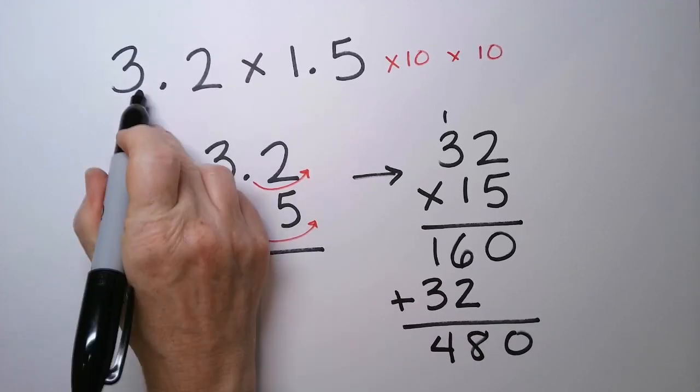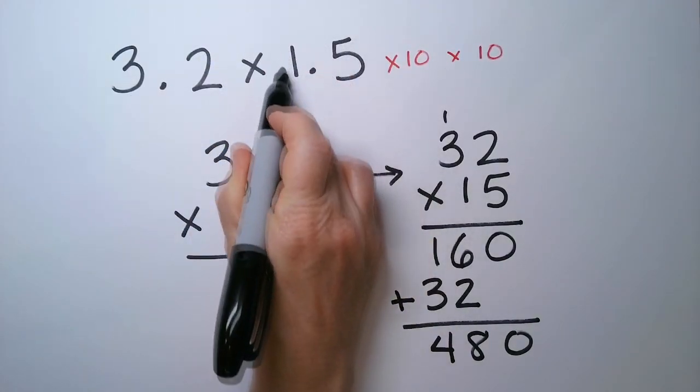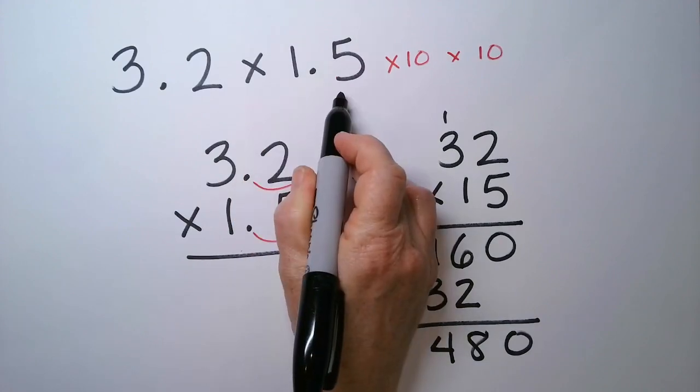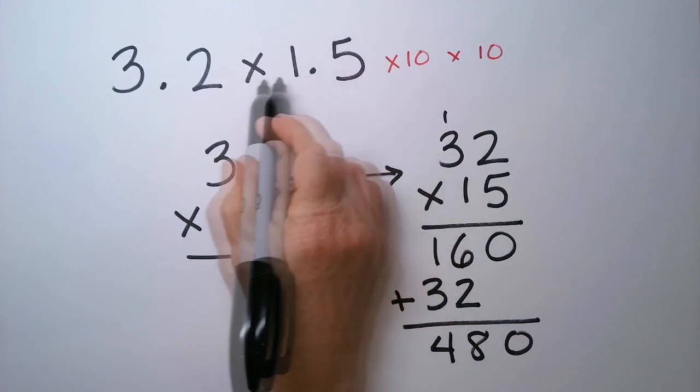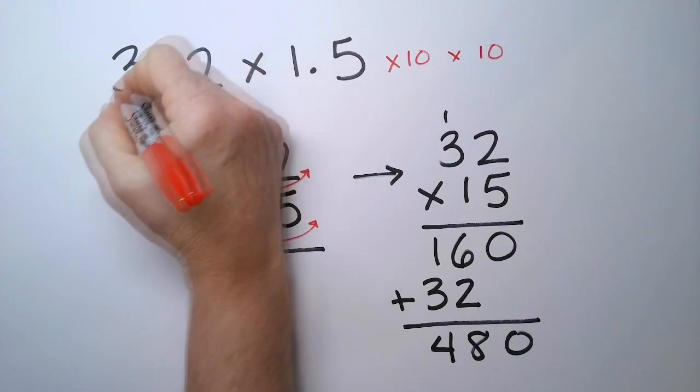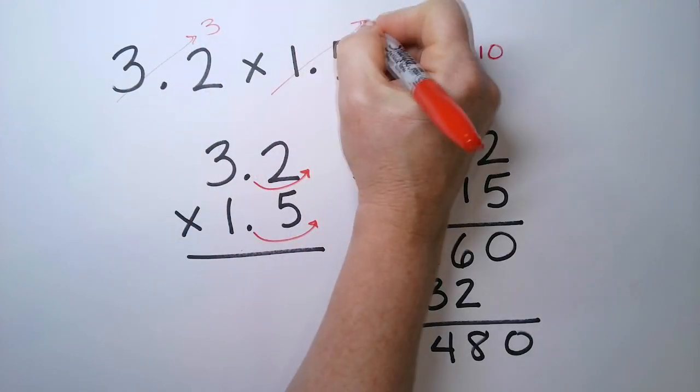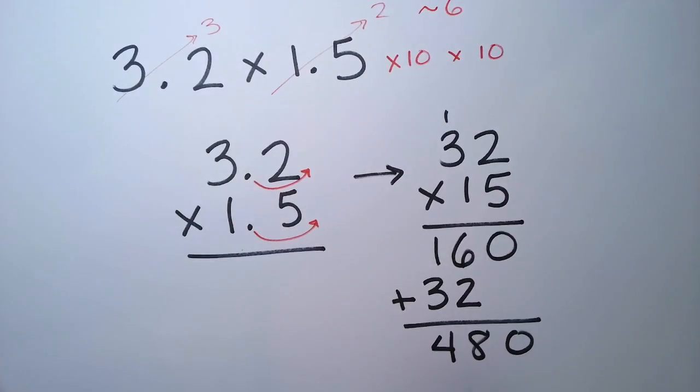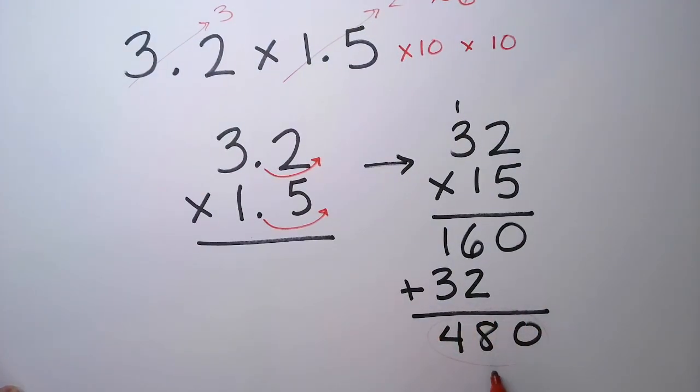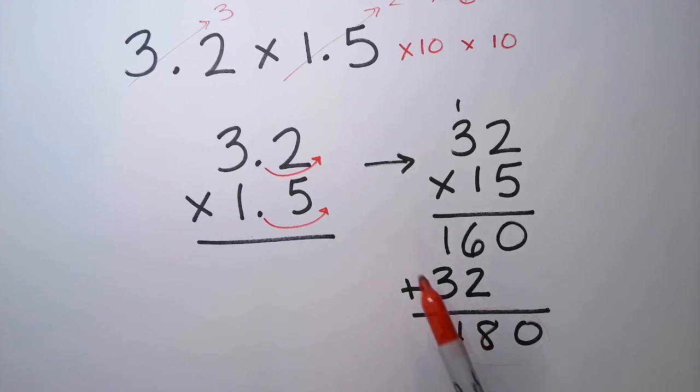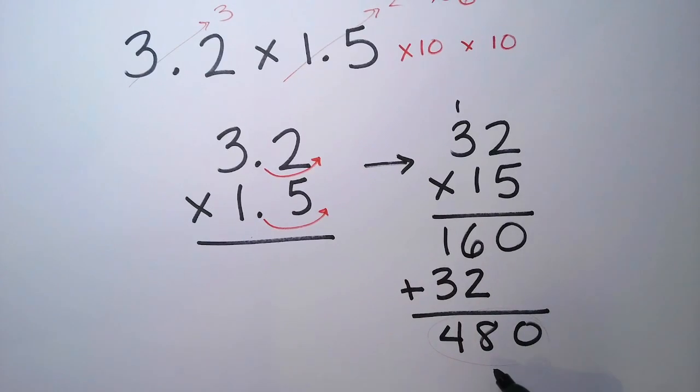So I know that about 3 times about 1 and a half, or let's just call this 2. So this number is about 3. This one's about 2. 3 times 2 is about 6. So I know a number of 480 can't possibly be the right answer. And we know that because we didn't put the decimal point back in.